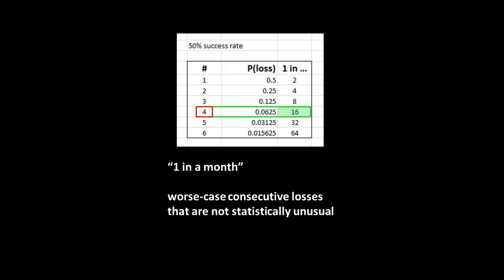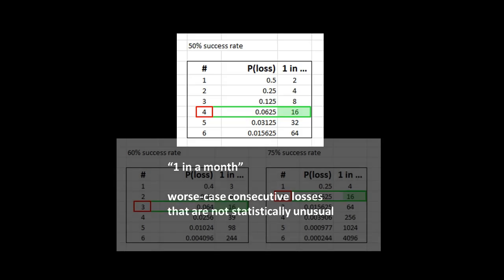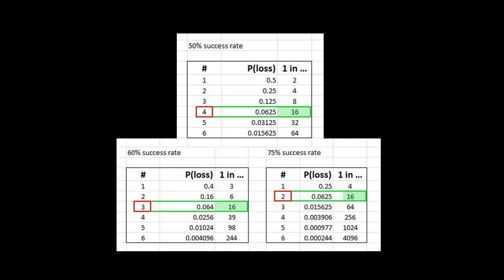That is a worst case scenario, but it's not statistically unusual. Interestingly, I can look at this number for different success rates. For 60% we'd expect to have three consecutive losses; for 75%, we'd expect two consecutive losses. This is the largest number of consecutive losses I would expect to happen due to random chance. The next line down gives me the number of losses I do not expect to happen. So I can start using these numbers to infer my success rate. If I'm targeting 60% success, I do not expect four consecutive losses — if I get four consecutive losses, most likely I don't have a 60% success rate. If I'm consistently only ever having two consecutive losses, I conclude I'm at 75% success.